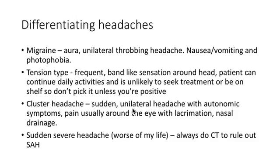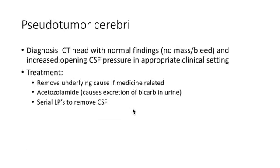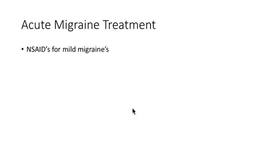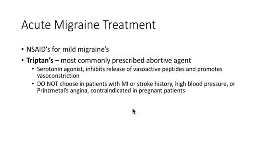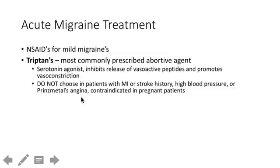For migraine treatment: first-line is NSAIDs, but that's usually not going to be the shelf answer. The best first drug is a triptan — these are abortive agents given after the migraine has started. They are serotonin agonists that inhibit release of vasoactive peptides, causing vasoconstriction. Do not give triptans to patients with a prior MI or stroke, uncontrolled hypertension such as blood pressure of 200/100, or Prinzmetal's angina — which is ST elevation from vasospasm.